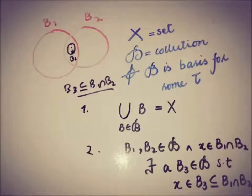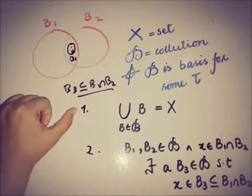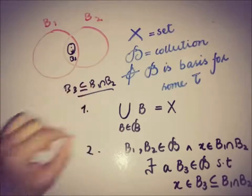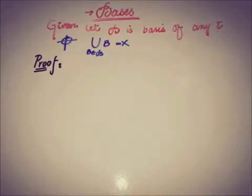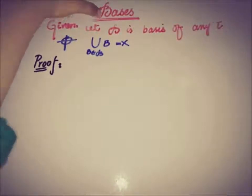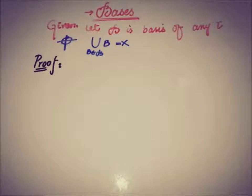Now proving the first condition: the union of all elements from the collection is equal to X. The given part is that the collection is a basis of some topology tau, and the target is that the union of all elements from the collection equals X.